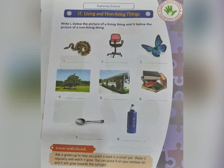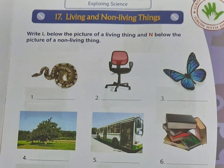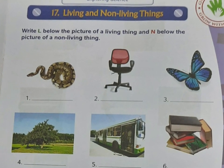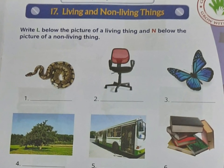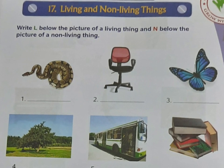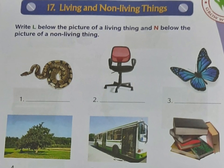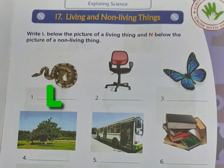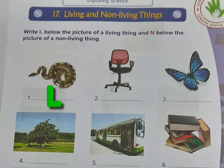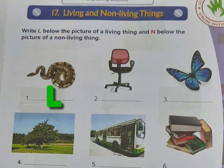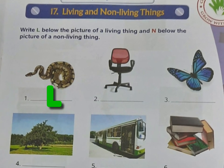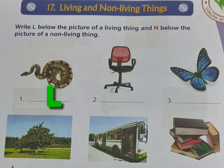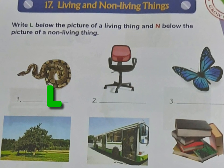Here are a few examples of living and non-living things. Write L below the picture of a living thing and write N below the picture of non-living things. First one — you can see here a snake. A snake can grow, breathe, and move, so it is a living thing.